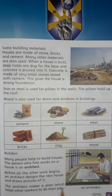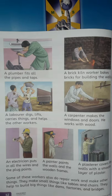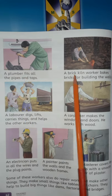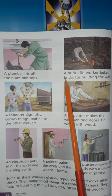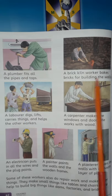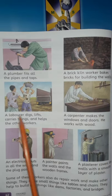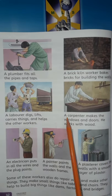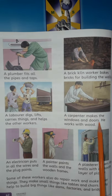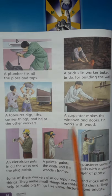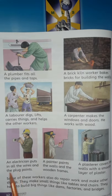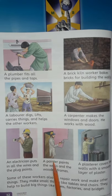The architect makes a plan which helps other workers to do their job. Page number 42: a plumber fits all the pipes and taps. A brick worker bakes bricks for building the walls. A laborer digs, lifts, and carries things and helps other workers. A carpenter makes the windows and doors — he works with wood. An electrician puts all the wires and plug points.